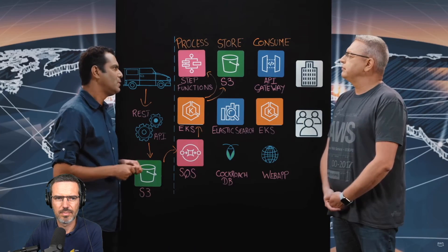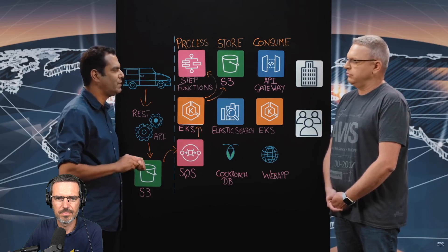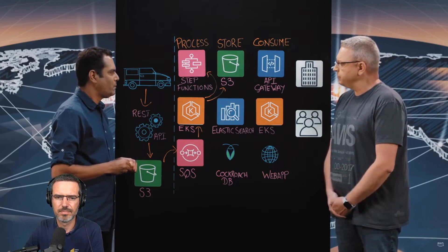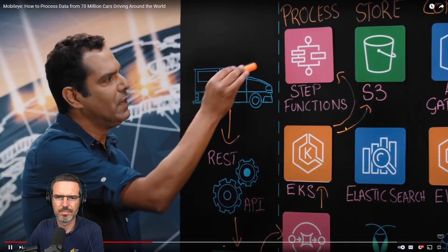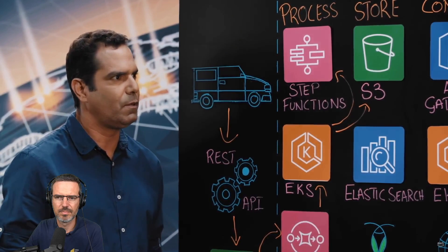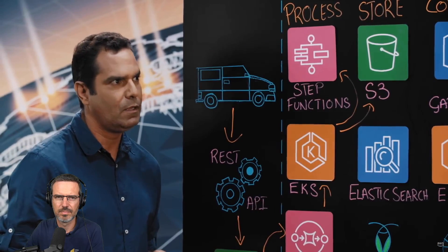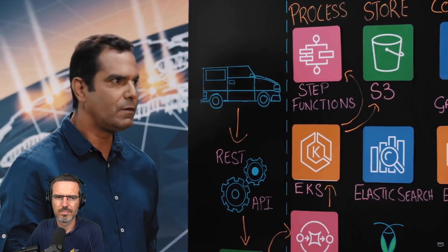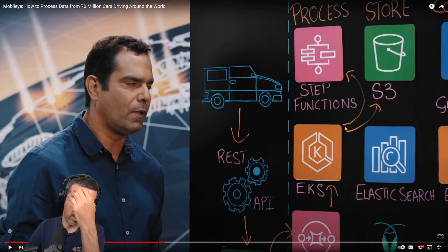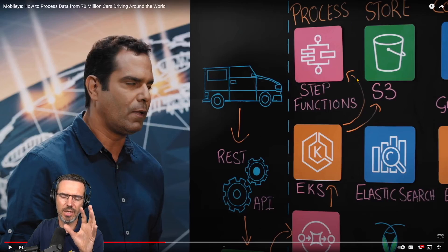One example of those algorithms is the extraction of potential construction zones from vehicles. The results are then exposed to the rest of the system's components — for example, a sophisticated clustering mechanism which combines observations from different vehicles into clustered events. They're doing machine learning here — extracting road work zones and similar events using these Step Functions.